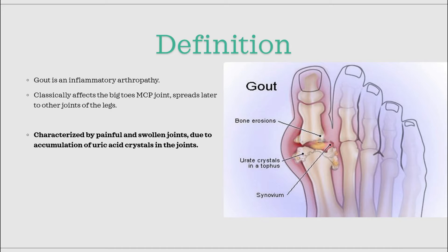This disease occurs due to accumulation of uric acid crystals in the joints. These crystals cause inflammation, which leads to very painful and swollen joints. Over time, these crystals and inflammation leads to erosion of the joints, and the erosion can end up completely obliterating the joints.